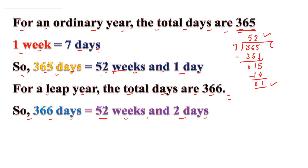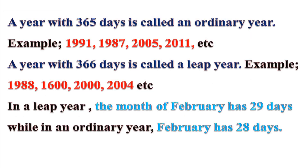So we can say one year has 52 weeks. A year with 365 days is called an ordinary year. Examples: 1991, 1987, 2005, 2011 — these are all ordinary years with 365 days.